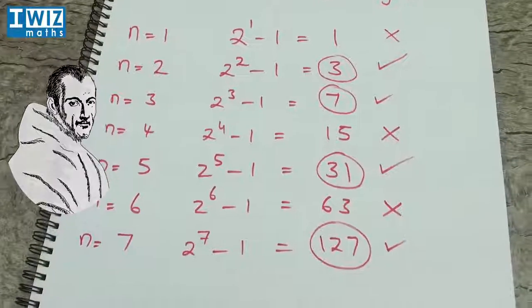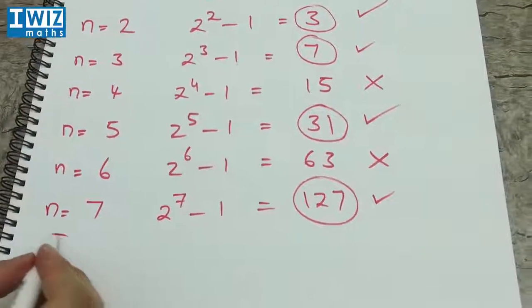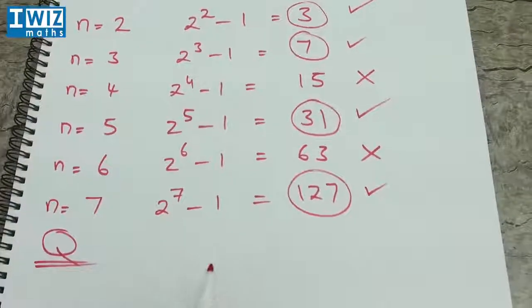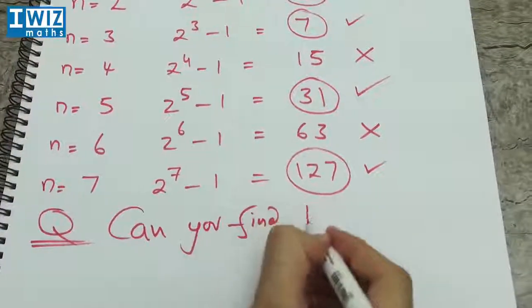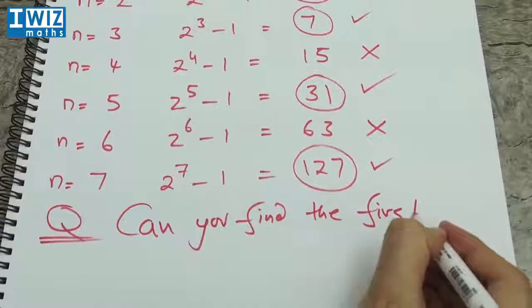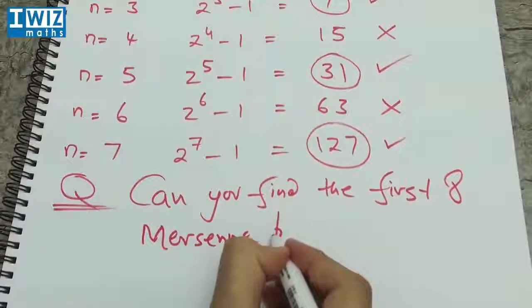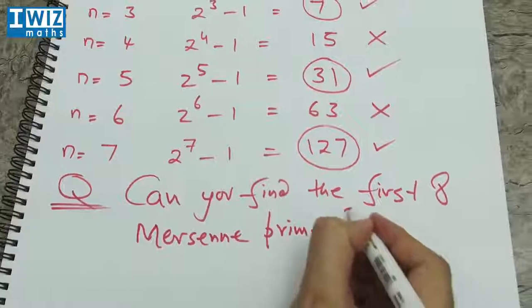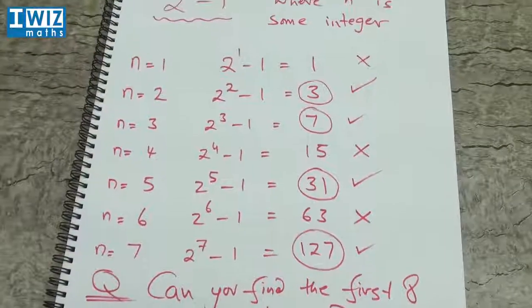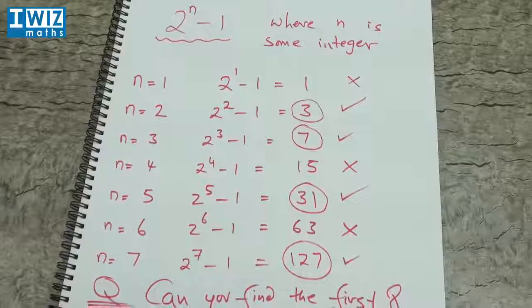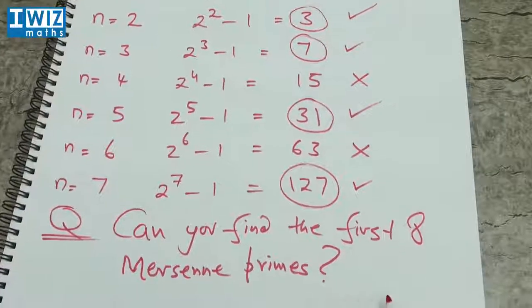So as is the case with most of our videos, what we do is we leave you with a question, we leave you with something to do yourself. So in that same spirit, we will again leave you with a question and the question is the following. Can you find the first 8 Mersenne primes? In fact, we have already found the first 4 Mersenne primes for you. And the question here is, can you go ahead and find the first 8 Mersenne primes? So effectively, you just need to find the next 4 Mersenne primes.